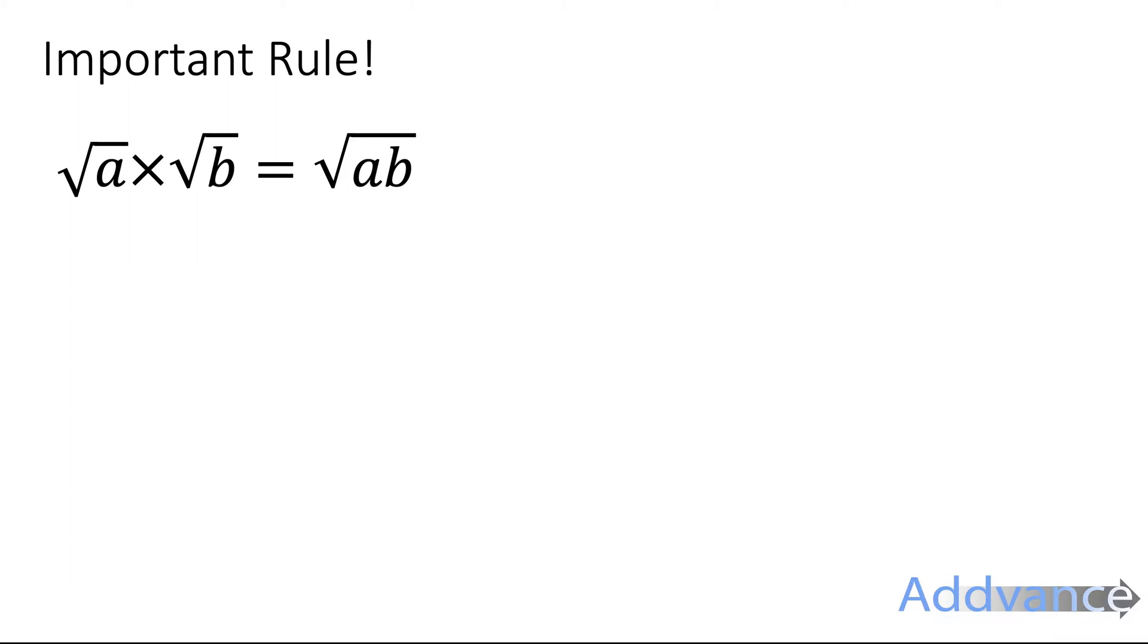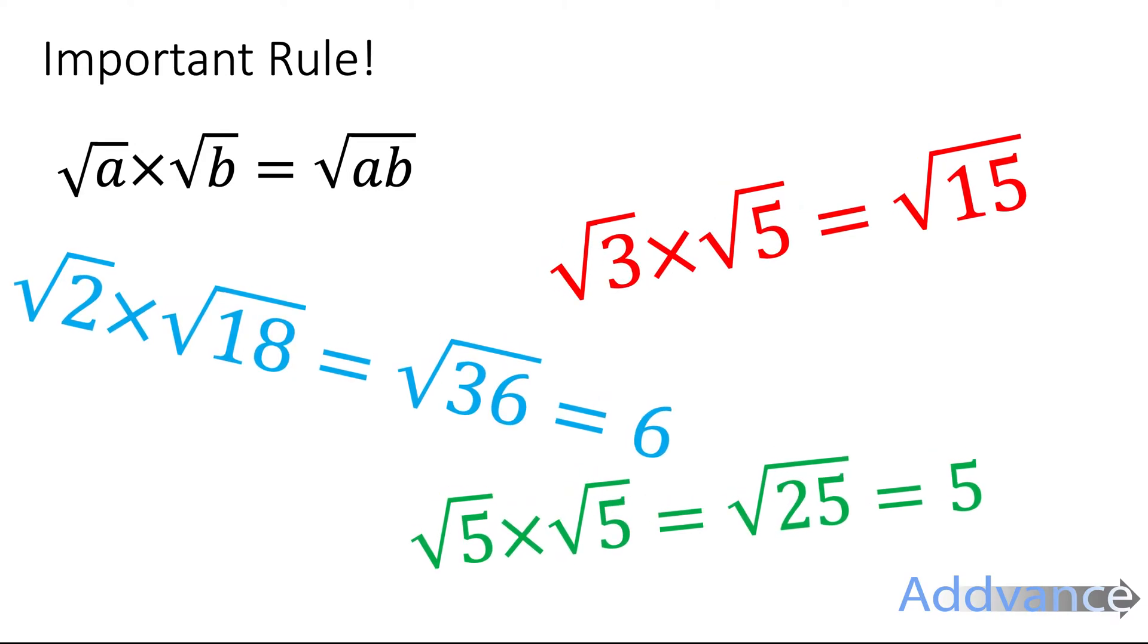So an important rule is square root of a times the square root of b is the square root of a times b. The square root of 3 times the square root of 5 is the square root of 15. The square root of 2 times the square root of 18 is the square root of 36. But that simplifies really nicely, because the square root of 36 is just 6.